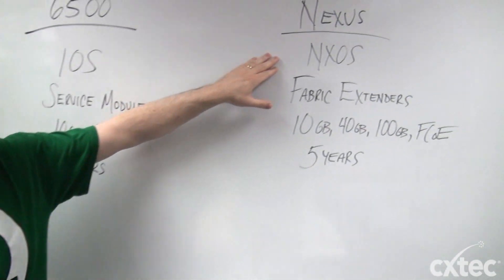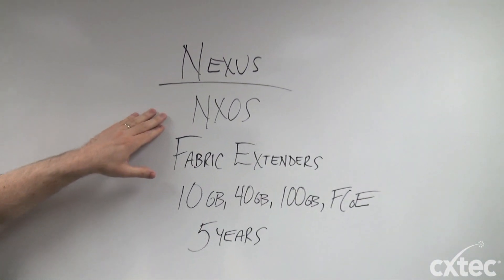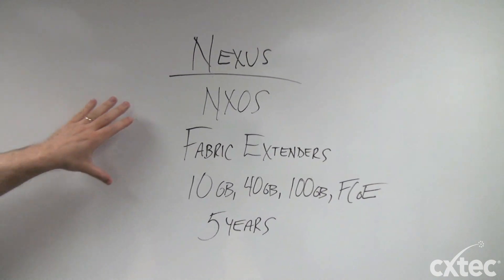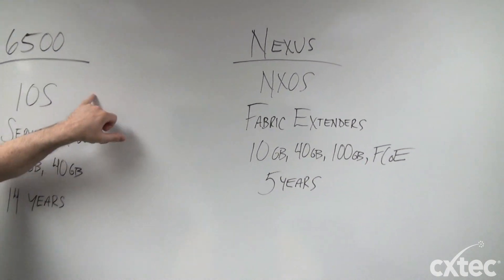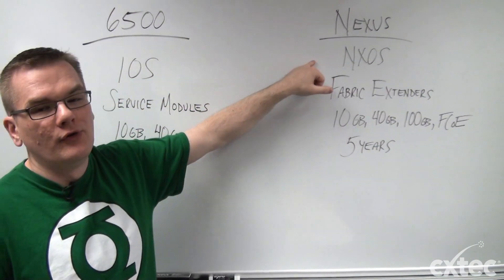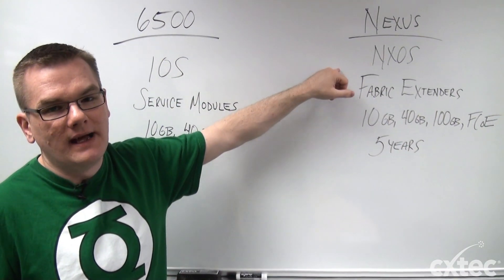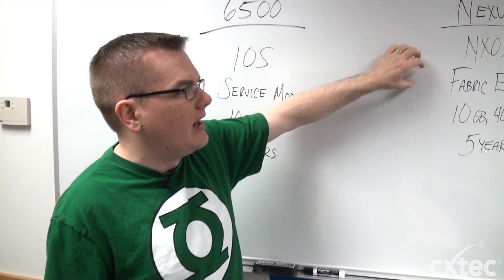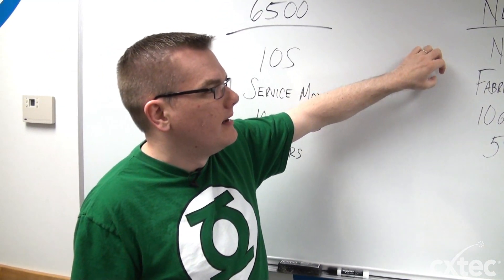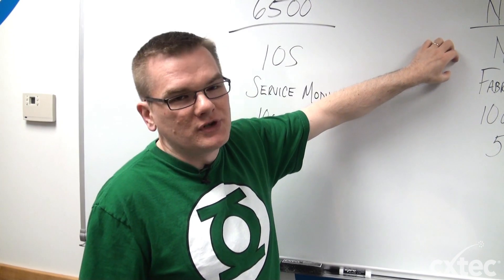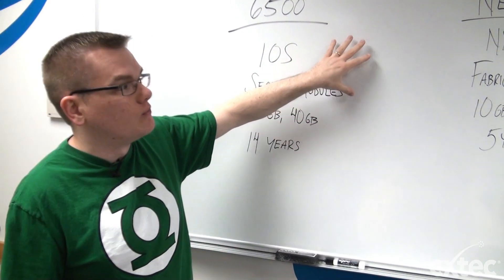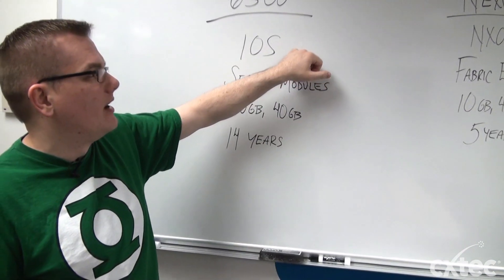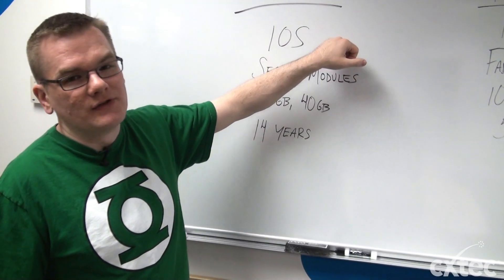On the other side of the spectrum, you have the Nexus. While it has a newer operating system, the NXOS has some very similar features to the iOS, but it's built off the MDS 9000 architecture. While it still does have a lot of the power of a powerful switching platform that the 6500 does as well, it is lacking some of the features that the 6500 has at this point.